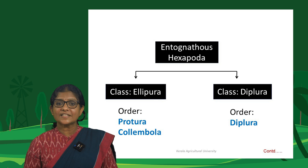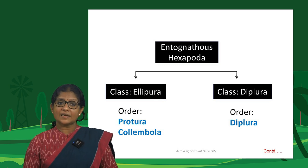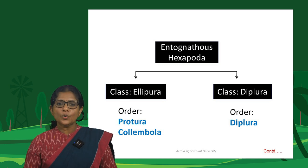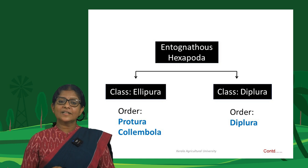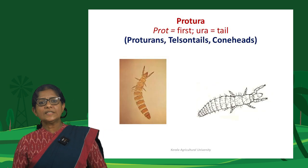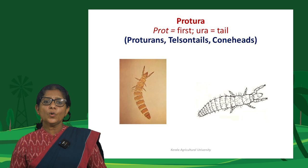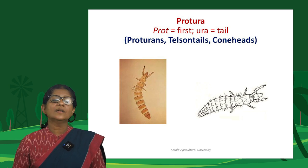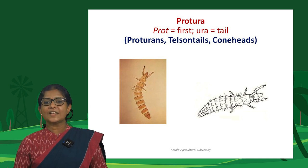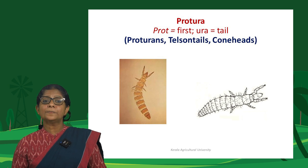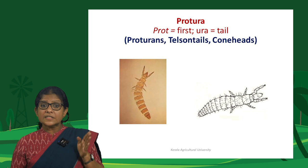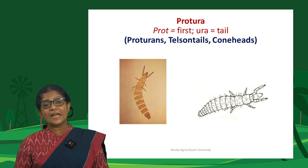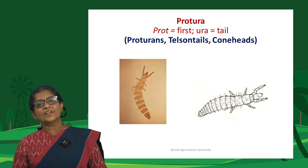Entognatha (non-insect hexapods) is grouped under two classes: class Ellipura (which includes order Protura and order Collembola) and class Diplura (which includes order Diplura). Protura, commonly called proturans, telsontails, or coneheads, lack antennae and hold their first pair of legs forward like antennae. They also have an additional segment after the 11th abdominal segment called the telson, hence the name telsontail.